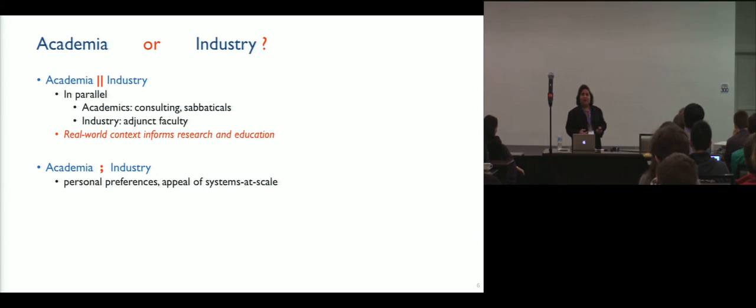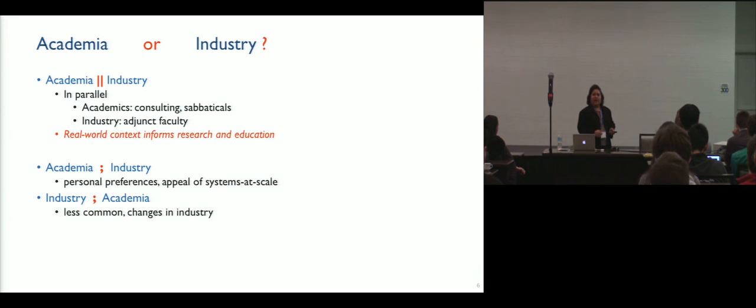You could think of other operators like the sequencing operator. So there's a lot of instances of people starting with academia and then moving to industry. These transitions are often based on personal preferences. And there's also, of course, the appeal of designing and contributing to large systems at scale. The other transition, going from industry to academia, is somewhat less common. And I would say happens more because of changes happening in the industry. And like a PL researcher, I might get carried away and think about all the different regular language operators that might give me different combinations of these strings. Okay, so let me stop right there. I'm going to talk about academia or industry.